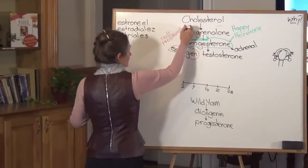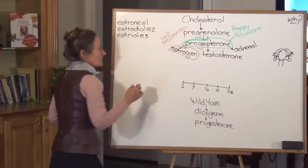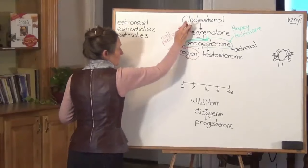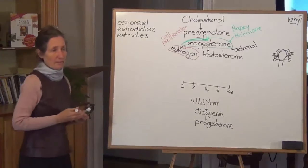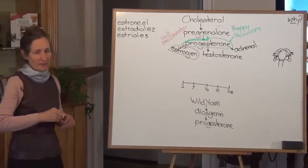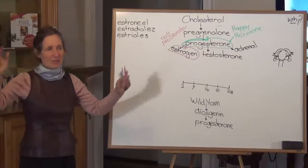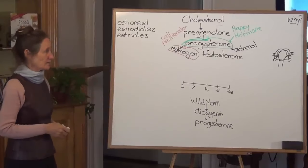So it is estrogen that causes the skinny young girl to develop into a beautiful shapely woman. But if that beautiful shapely woman gets out of shape, it's usually because of the estrogen has remained high. And we're going to look at why that is so.